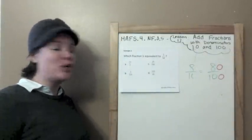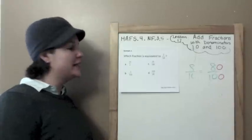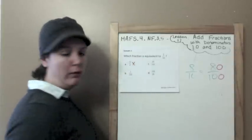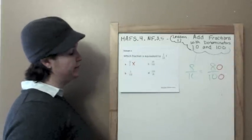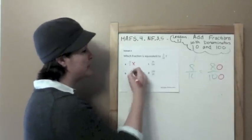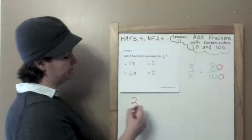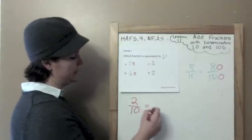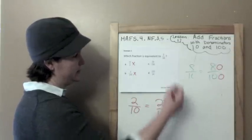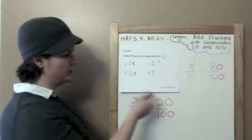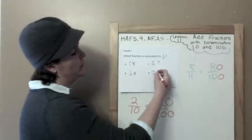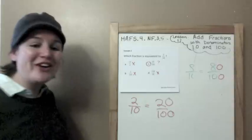Example 2: Which fraction is equivalent to two-tenths? Ten halves? No, that's just flipped — that's a fraction greater than one. Two one-hundredths? No, that would be a much smaller piece. Twenty one-hundredths? Let's see — two, ten, add a zero, add a zero — yes! And one hundred twentieths would be a fraction greater than one, so that's not what we need. The answer is twenty one-hundredths.